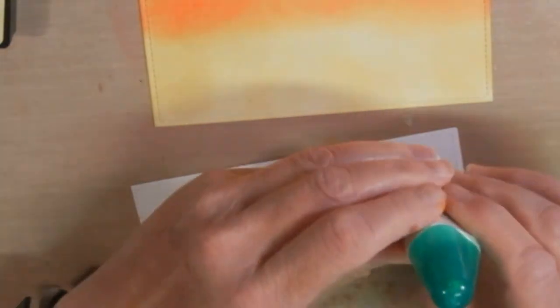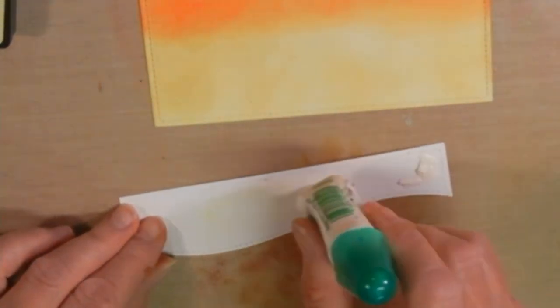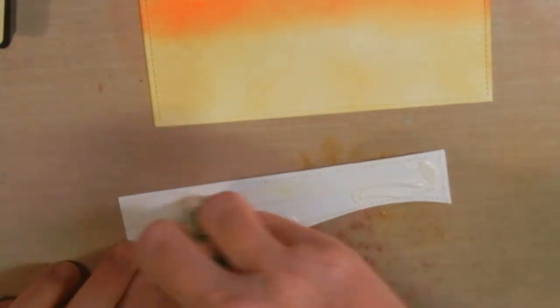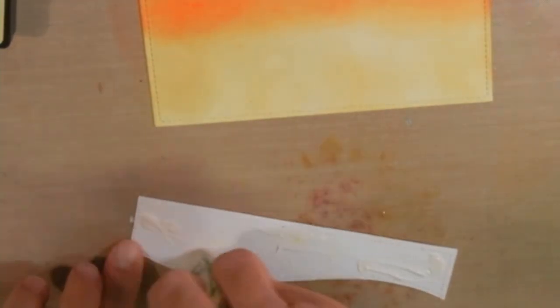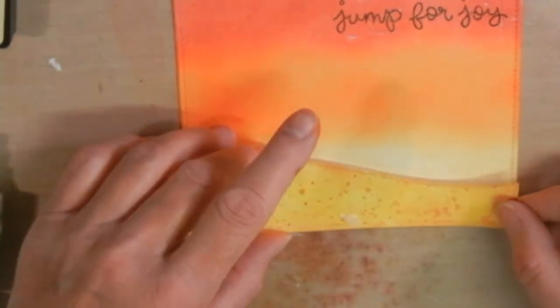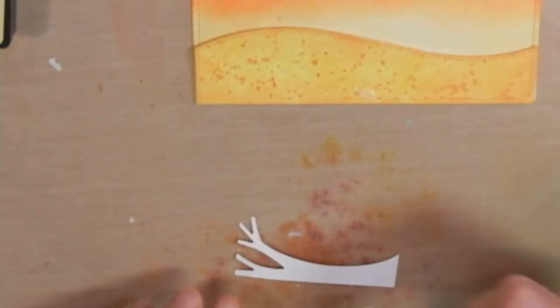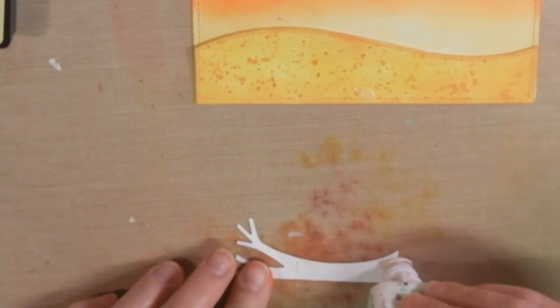I finished the ink blending so now I'm putting on the grass part and I'm using my Tombow Multi Glue to put this on. I think I'm going to get a different glue after I finish this up. I'm not really in love with it. Although I'm not really one who really likes glue I hate having my fingers sticky. So I often use my tape runner.